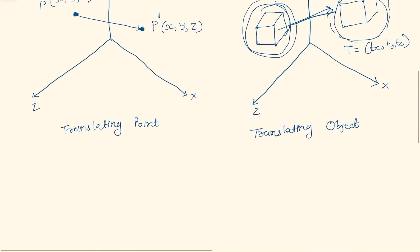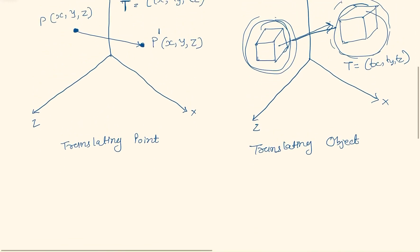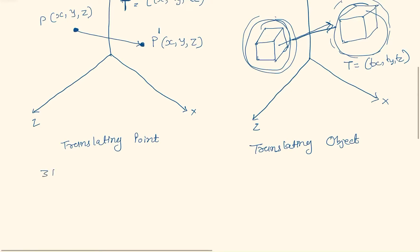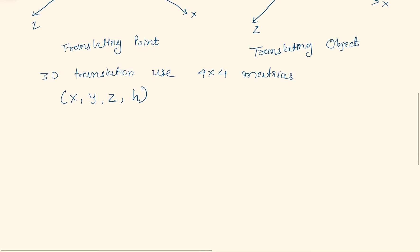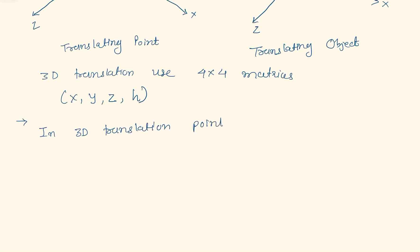In 3D translation we are using a 4×4 matrix — that is x, y, z, and h, where h is for the homogeneous coordinate. In 3D translation, point (x, y, z) is to be translated.